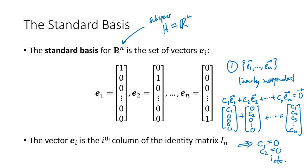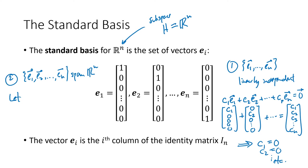The second condition says these e's have to span my subspace — in this case they have to span Rn. That means every vector in Rn can be written as a linear combination of these vectors. So if we take any vector y in Rn, let's say y = (y1, y2, ..., yn)...